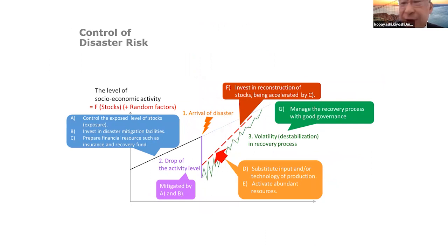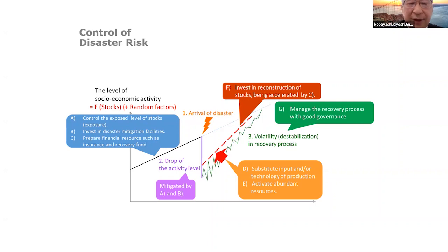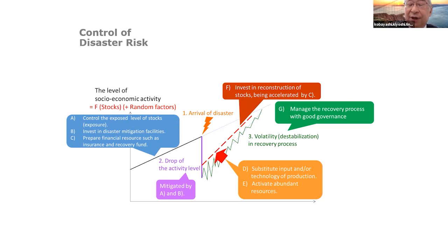This diagram characterizes the concept of resilience and how to control disaster risk. At a certain point in time, a disaster arrives, damage occurs, and economic status goes down. From that point, the recovery process starts. Before and after the disaster we must develop an integrated framework to control disaster risk, and infrastructure resilience provides us with such a comprehensive integrated framework.